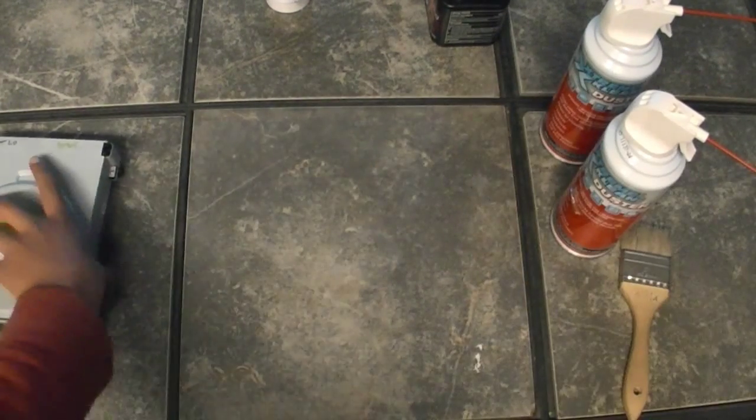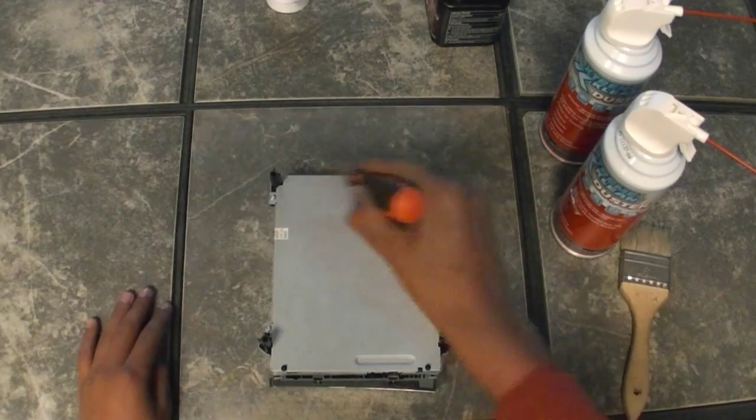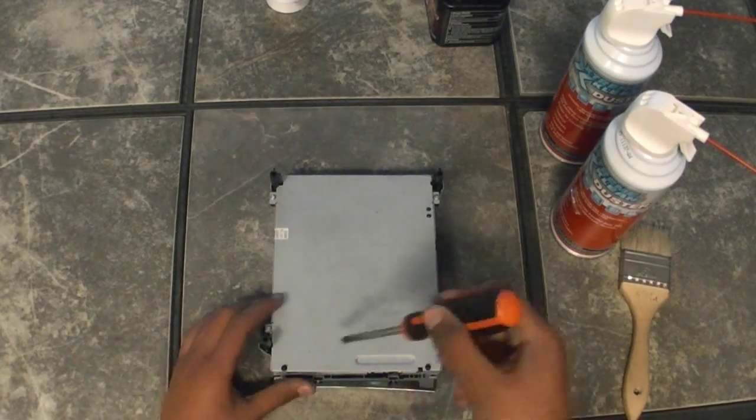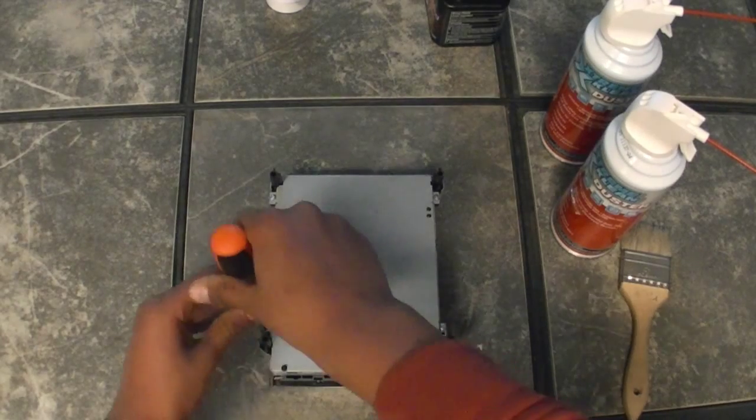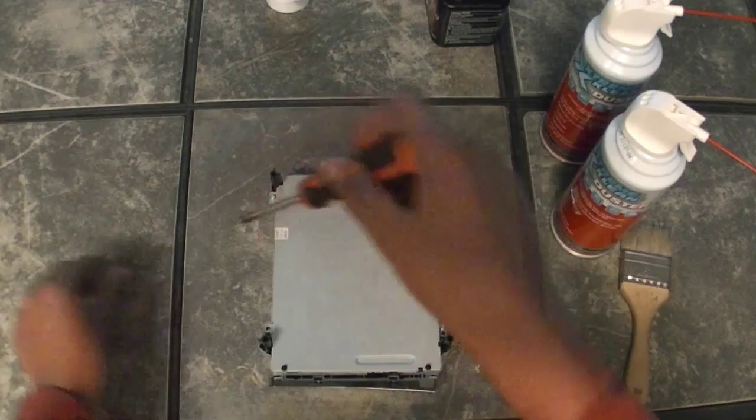First thing you're gonna want to do is there's four screws on the bottom of the DVD Drive. What you want to do is unscrew them and set them to the side.